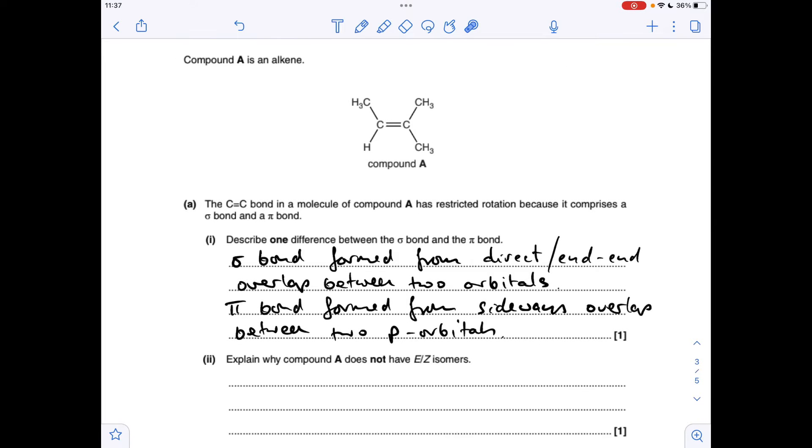Moving on to the next question, one difference between sigma bond and pi bond. Well, a sigma bond is formed from the direct, or the end-to-end overlap between two orbitals, whereas the pi bond is formed from the sideways overlap between two p orbitals. You could have actually given a much simpler answer and just said pi bonds are weaker than sigma bonds, but obviously I'm doing this for revision purposes, so I wanted to explain the difference in a bit more detail between those two bonds and how they form.